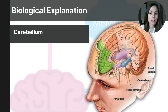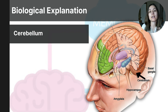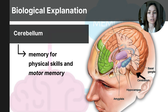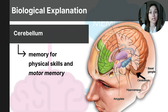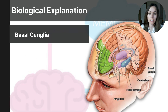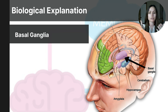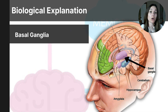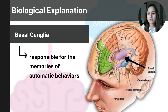The next part of the brain is the cerebellum. As you know, the cerebellum coordinates motor movements and is involved in the memory of physical skills and motor memory. The cerebellum helps you remember how to perform tasks like riding a bike or typing on a keyboard. Next is the basal ganglia — a group of structures located near the thalamus surrounded by the cerebral cortex. The basal ganglia are also involved in motor memories of automatic behaviors, specifically things like remembering how to brush your teeth or tie your shoes.